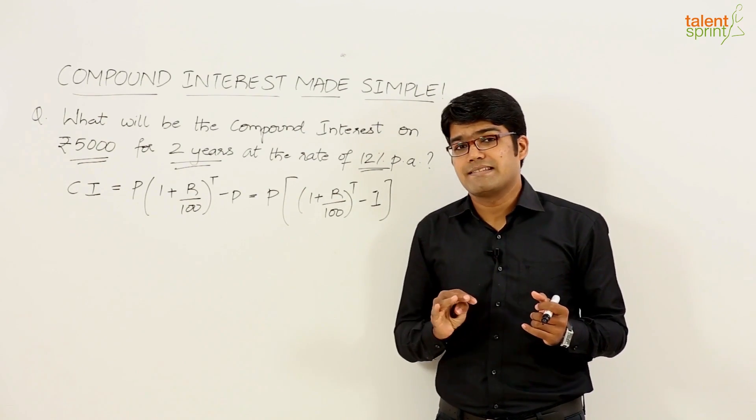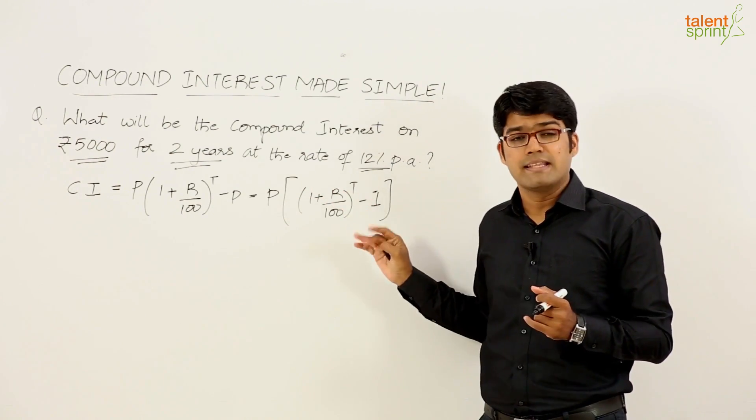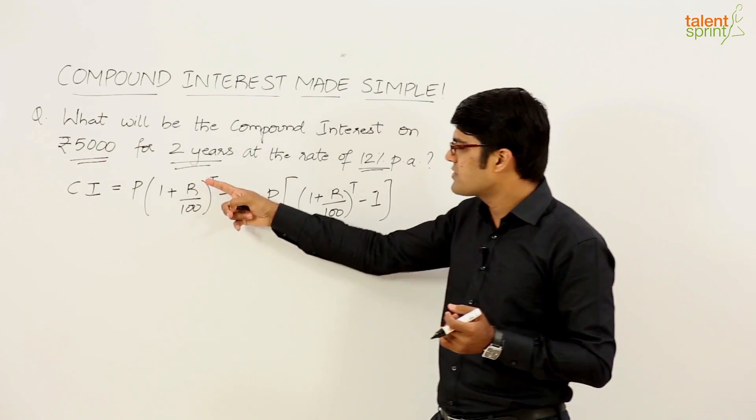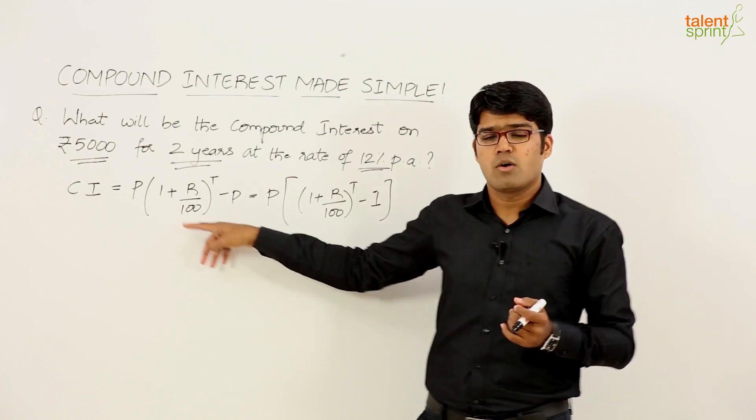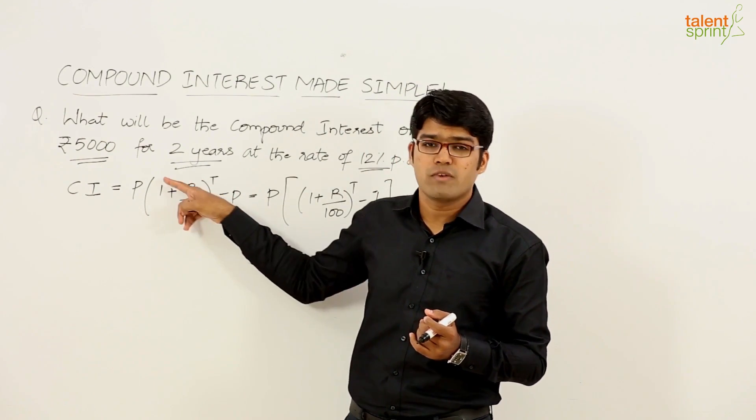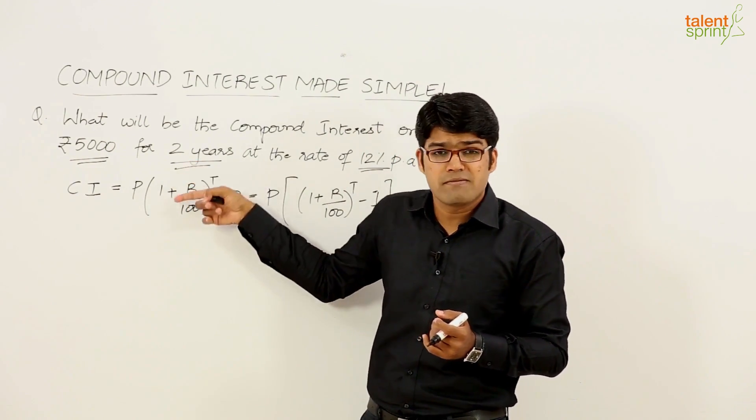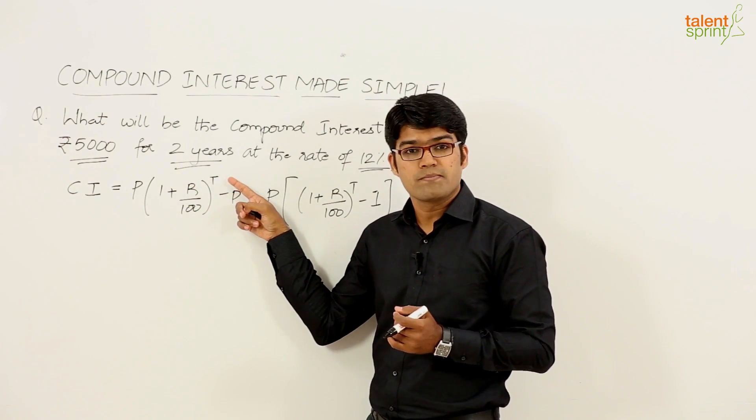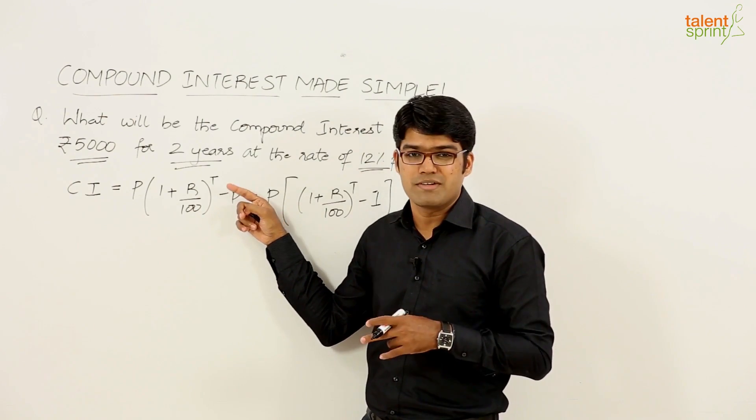But you know what, the complexity is doing the calculation here and that is because of this complex formula that we have. 5000 into 1 plus 12 by 100. Now 1 plus 12 by 100 is 112 by 100 which can be simplified as 56 by 50.